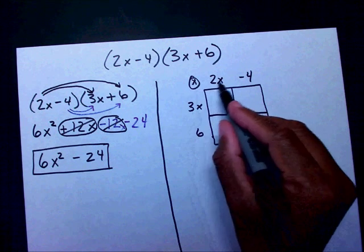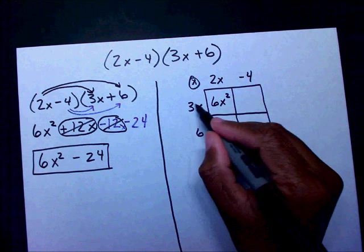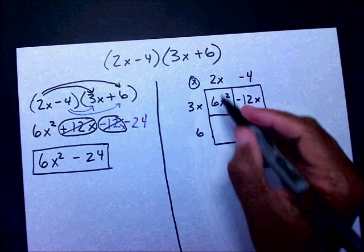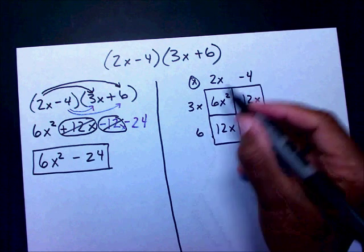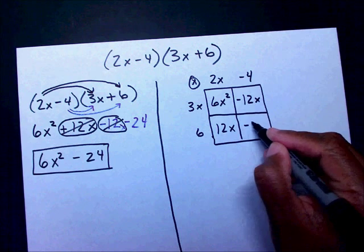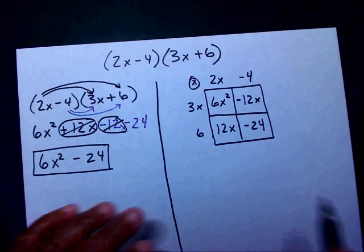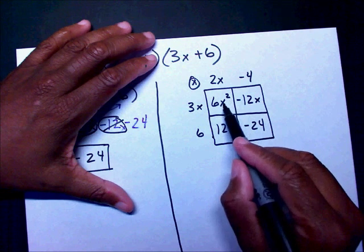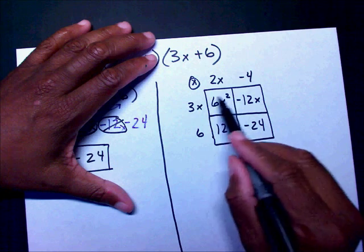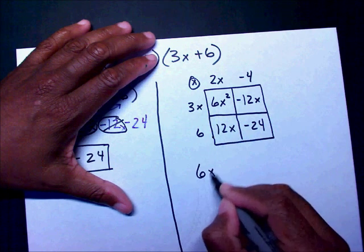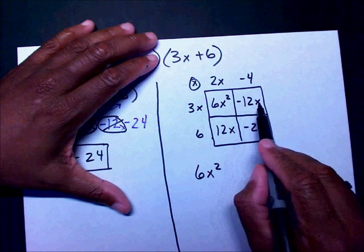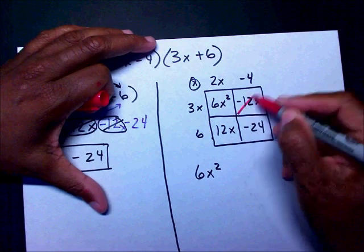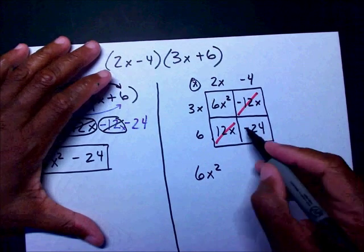3x times 2x is 6x squared. 3x times negative 4 is negative 12x. 6 times 2x is 12x. And 6 times negative 4 is negative 24. Now I combine like terms: I have only one x squared, so I bring down 6x squared. I have negative 12x and positive 12x — they cancel each other out. I'm left with minus 24.